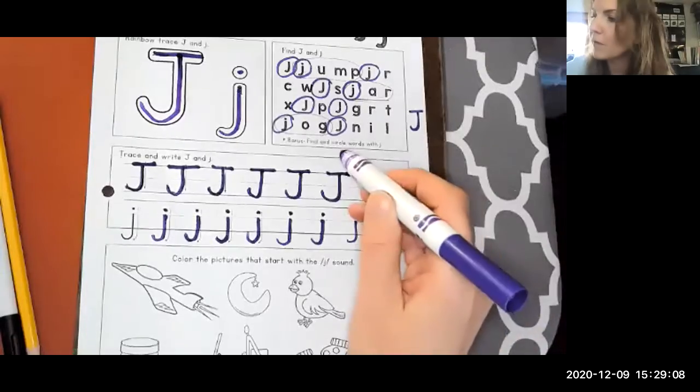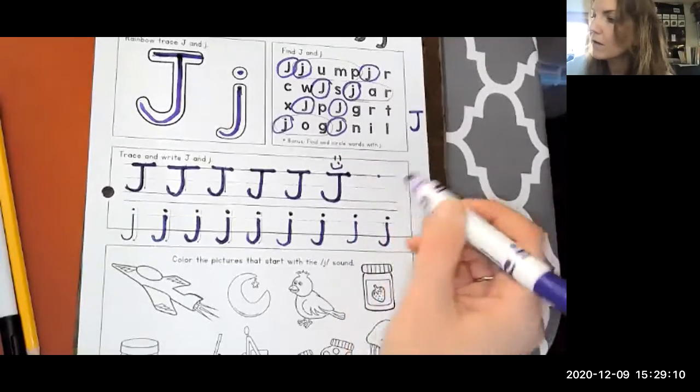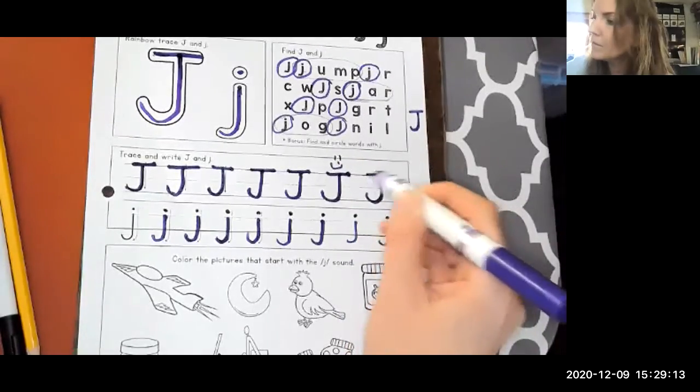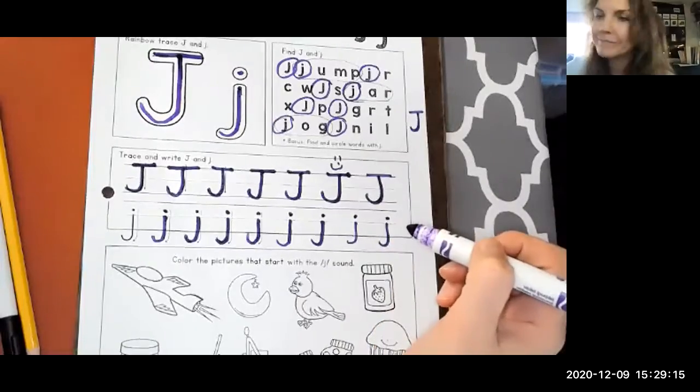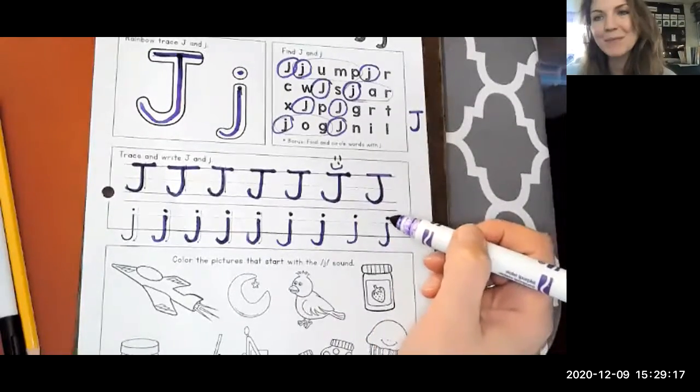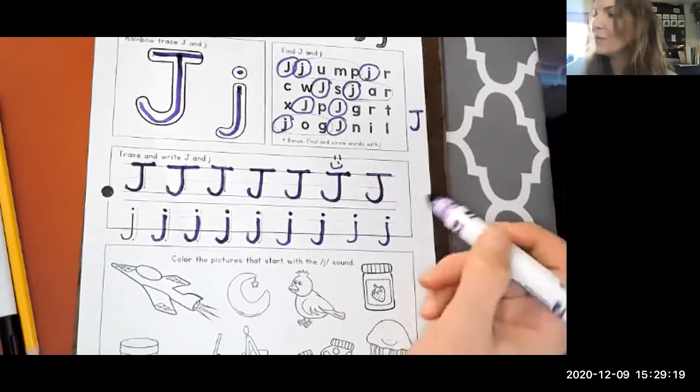Let's do three more. I'm going to go down, loop it up to the left and give it a hat. Down, loop it to the left. Give it a hat. Look at those. That one's probably my best one so far. Down, loop it. Oh, kind of went to the side a little. That's okay. They don't all need to be perfect. We're practicing, right? We're practicing.